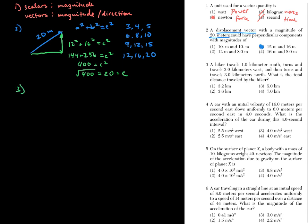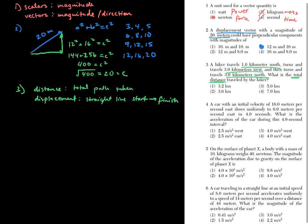Number three is about a hiker going south, west, and then north a certain distance, and we're looking for total distance. Distance and displacement are different: distance is your total path taken, while displacement is the straight-line start to finish and is a vector. We want the scalar total distance, so it's simply 1 + 3 + 3 = 7 kilometers, answer choice four.